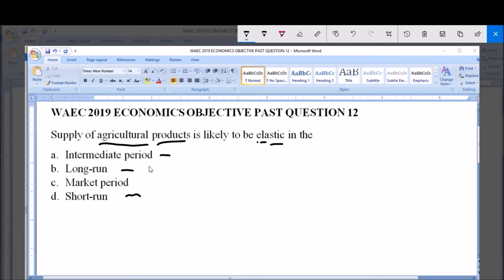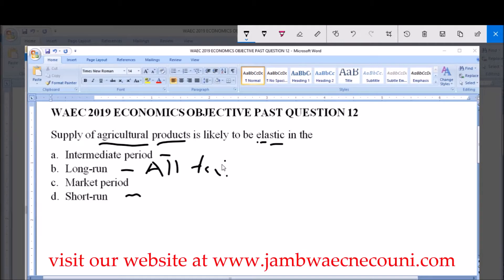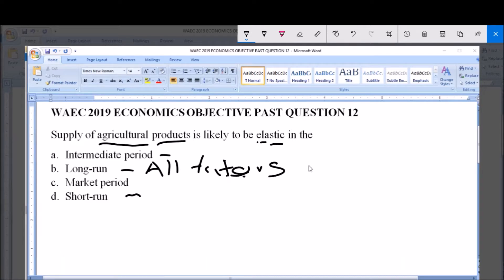Now, for the long run period, it's a period in which all factors of production and their costs are variable.